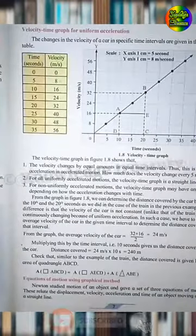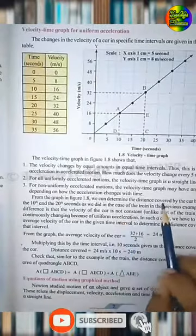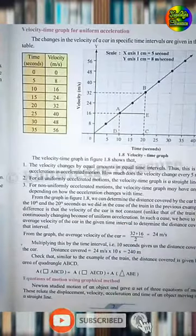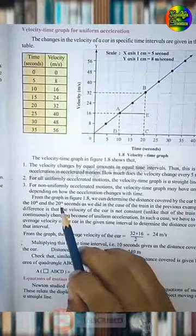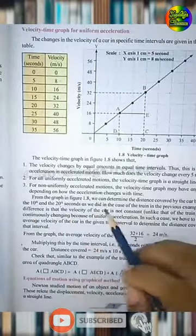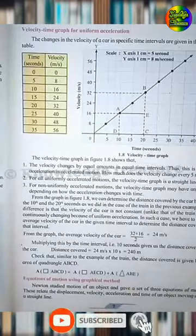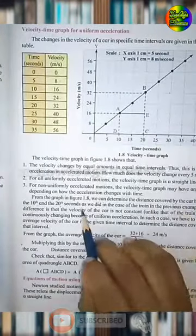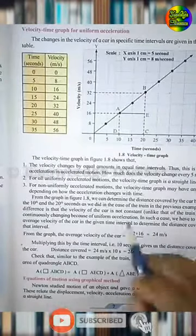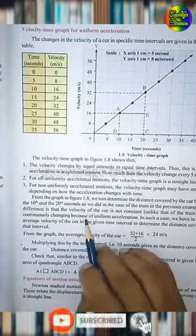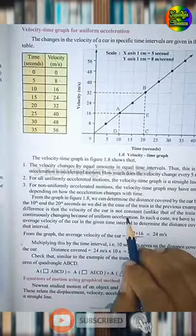Now, let us see how to determine the distance covered by the car between the 10th and 20th second. In this case, velocity is not constant. But it is continuously changing because of uniform acceleration.